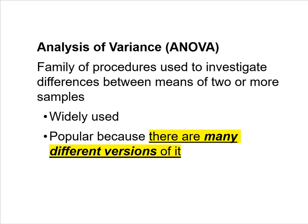ANOVA is popular because there are many different versions of it — that's our first fill-in-the-blank, highlighted in yellow. There's a form for studies with one independent variable, a form for two or more independent variables, a version for between subjects designs, and a version for within subjects designs. This lecture focuses on ANOVA with one between subjects factor.